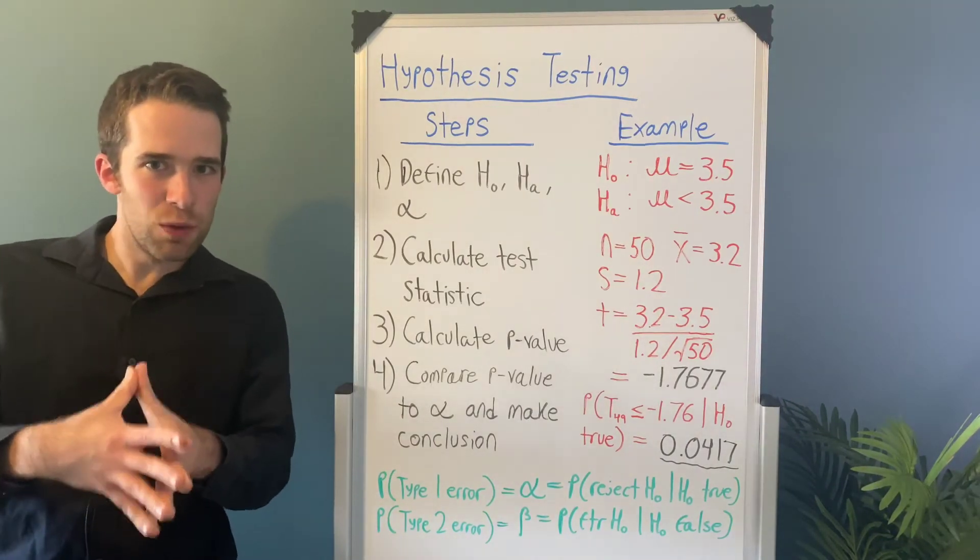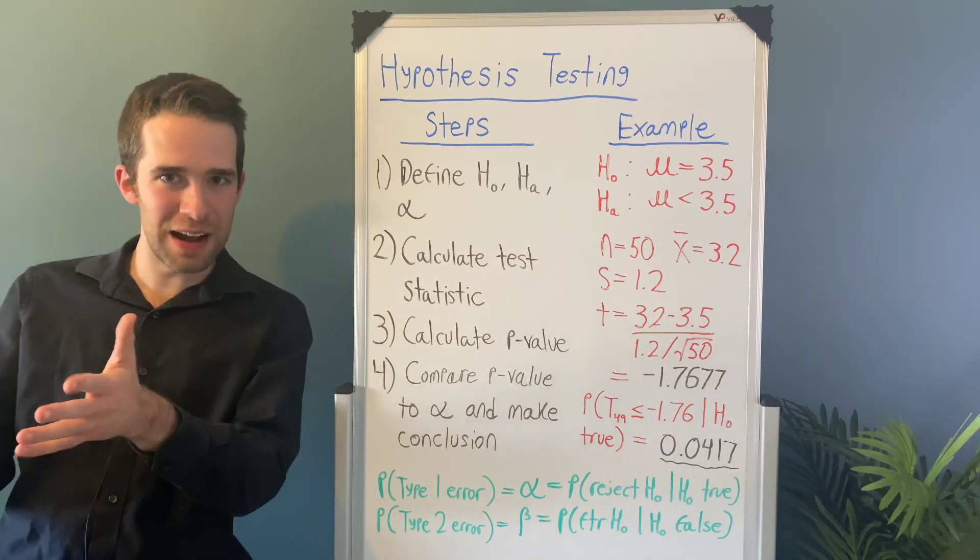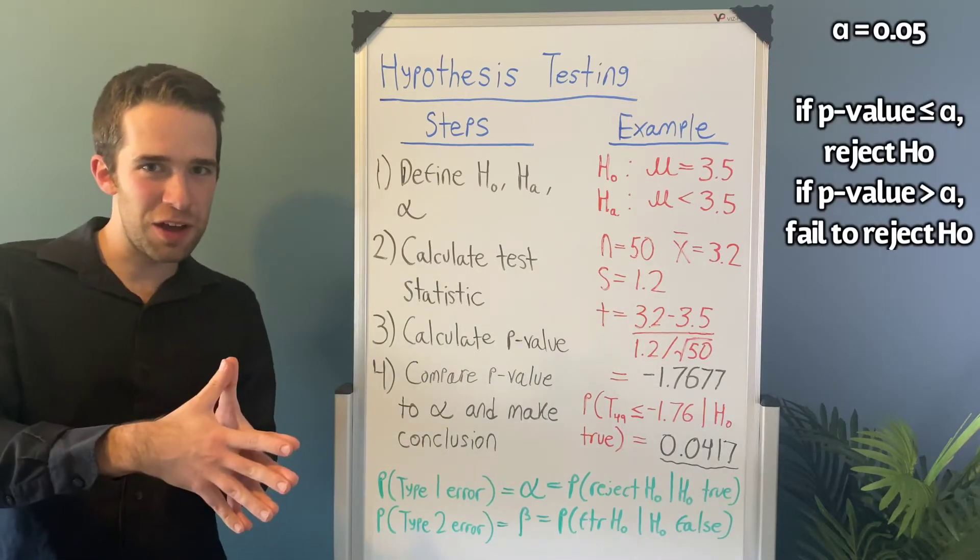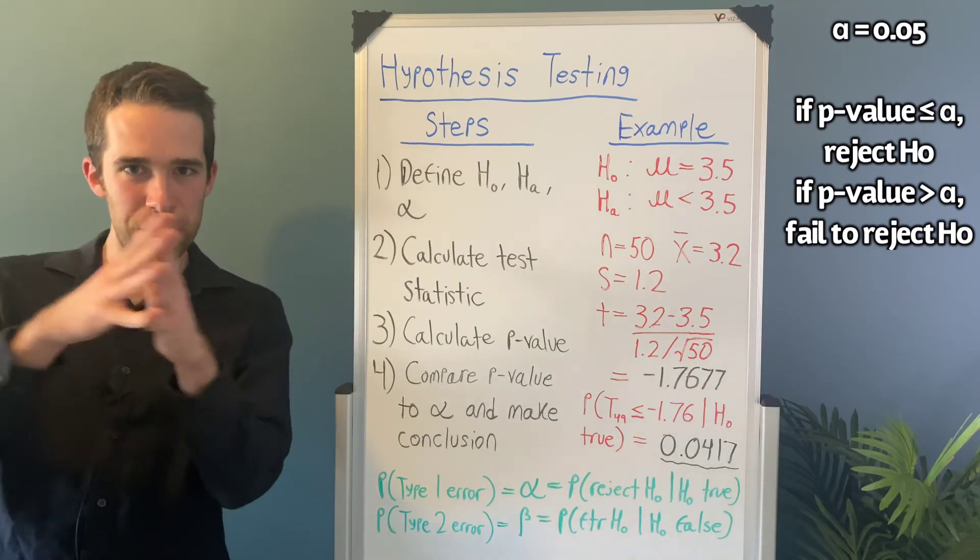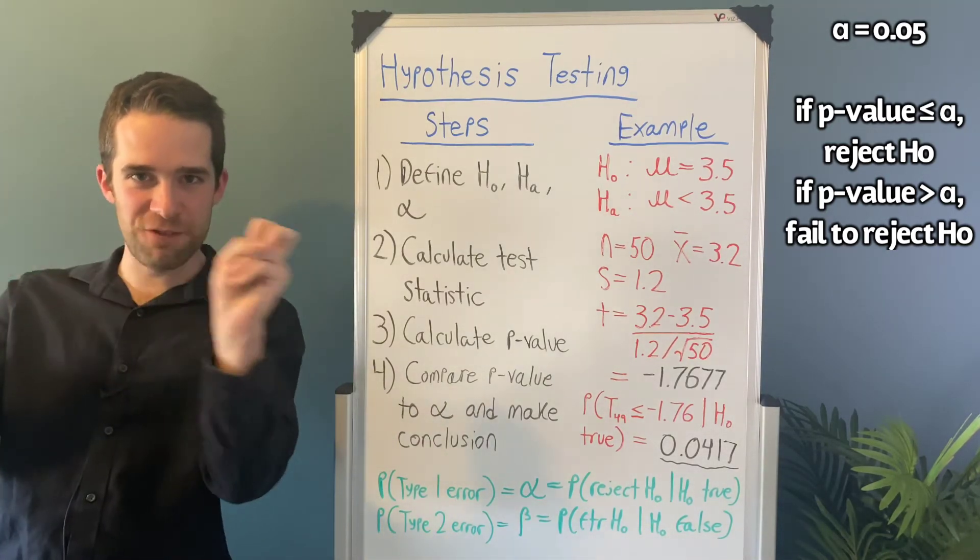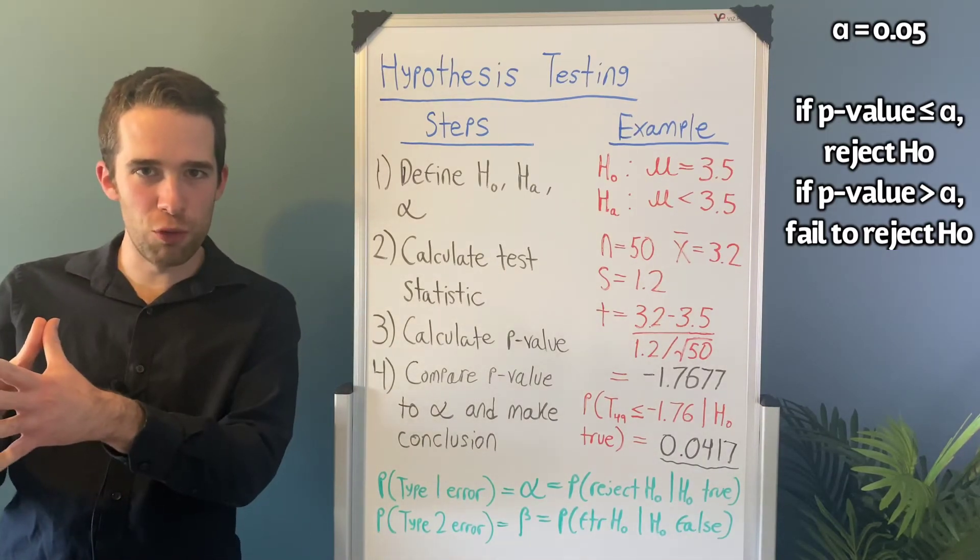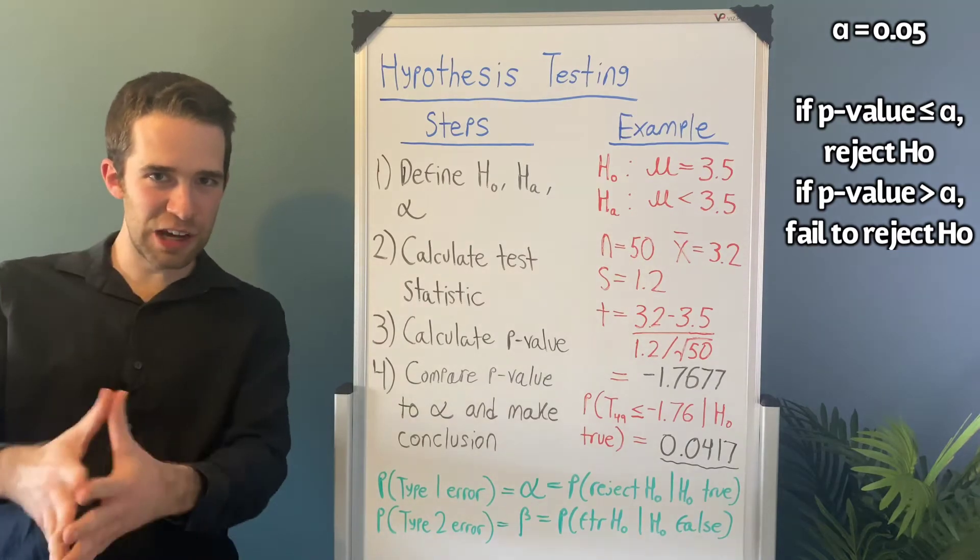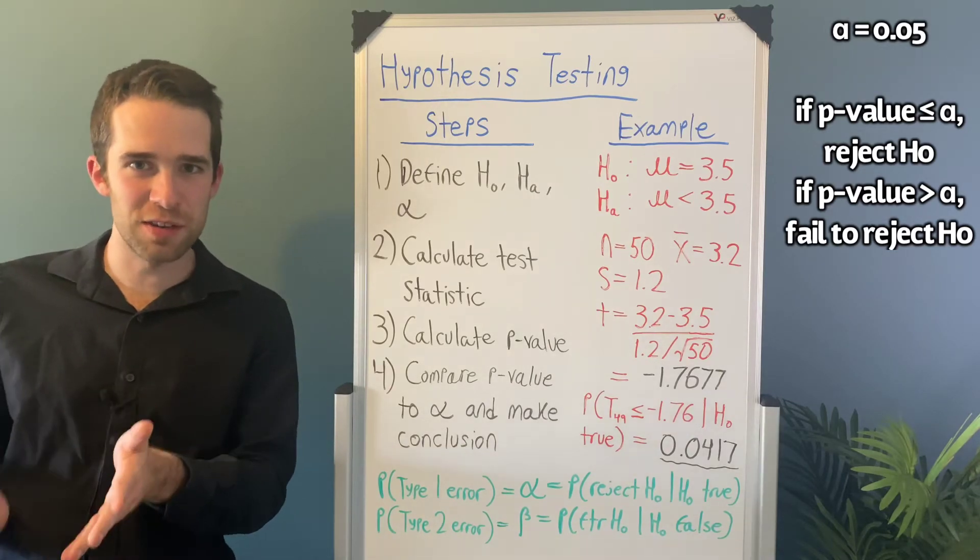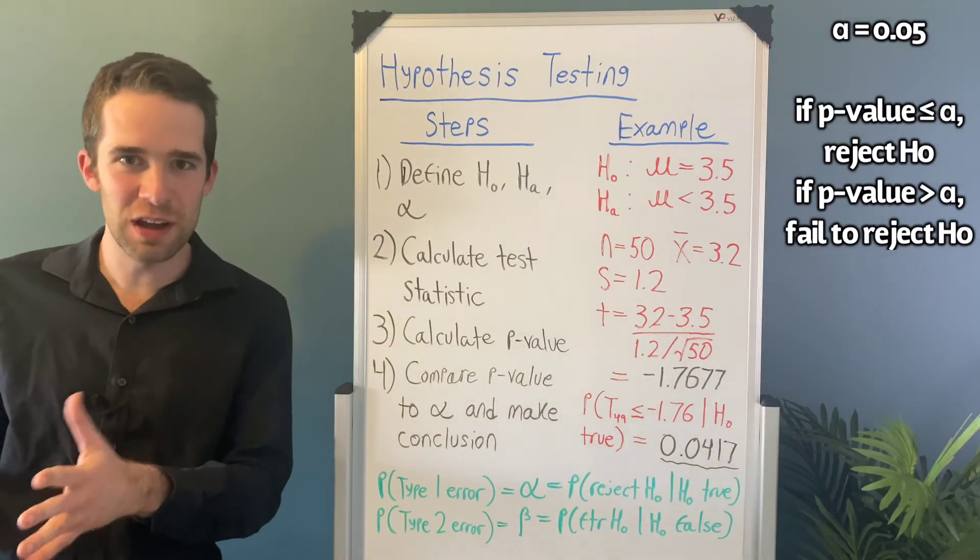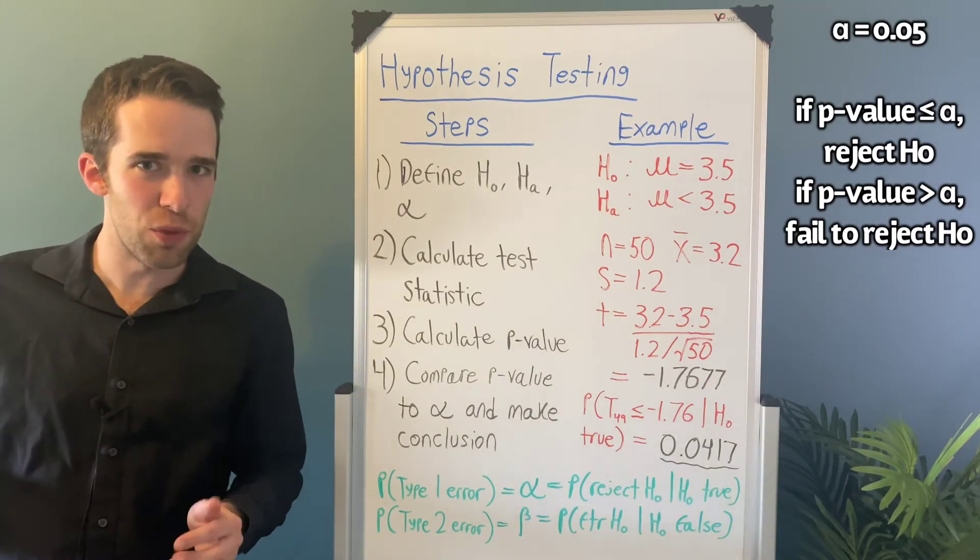In step four, lastly, we're going to compare that p-value we just calculated to our significance level that we picked at the beginning of this exercise. If the p-value is less than alpha, we're going to reject the null hypothesis. If the p-value is greater than alpha, we're going to fail to reject the null hypothesis. 0.0417 is less than 0.05, so in our case here we reject the null hypothesis, and our conclusion is there is statistically significant evidence based on the test that we just did that the true average number of hours that Americans spend on their phones daily is less than 3.5 hours.